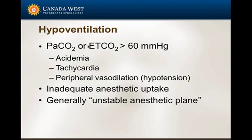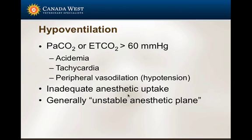Hypoventilation can lead to acidemia, which can then lead to arrhythmias. It can cause tachycardia, peripheral vasodilation, and make your patient hypotensive. You also don't get as good an anesthetic uptake. Generally, even if you don't have a capnograph, if a patient is tachycardic, hypotensive, breathing funny, and not staying at an appropriate depth of anesthesia — sometimes I'll put a capnograph on and find the CO2 is way up. Once we bring the CO2 back into normal range, the patient becomes a completely different patient.